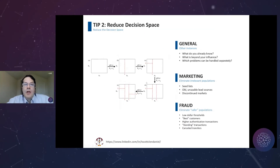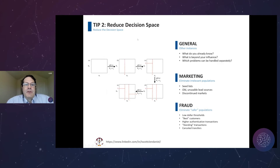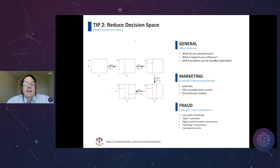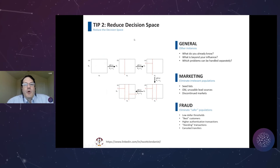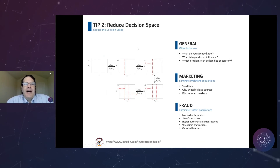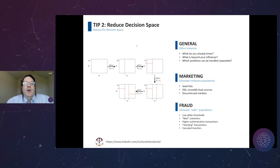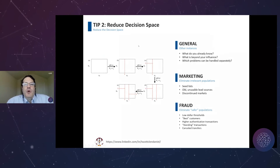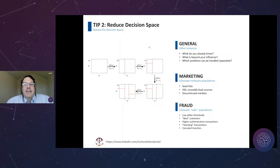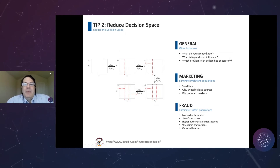Tip number two: reduce the decision space. Models are not particularly smart — they're just fast. When working with an algorithm and a dataset, you need to simplify the problem as much as possible before it reaches the algorithm, and remove cases that don't make a whole lot of sense. Consider: what do you already know, what is beyond your influence, and which problems can be handled separately?